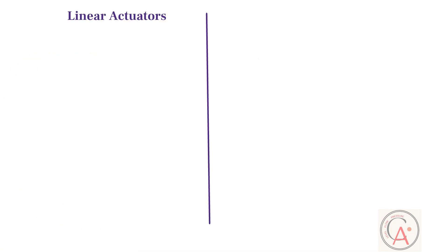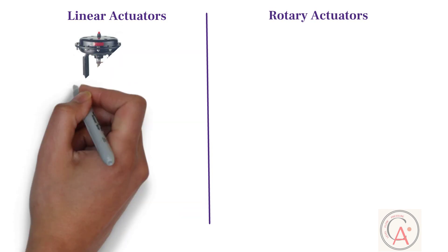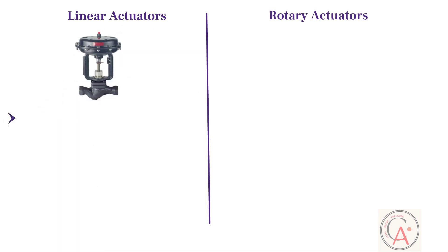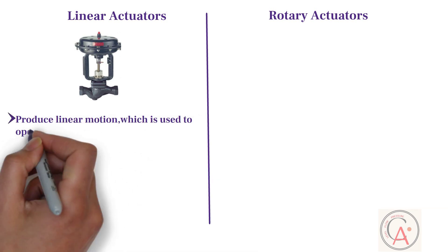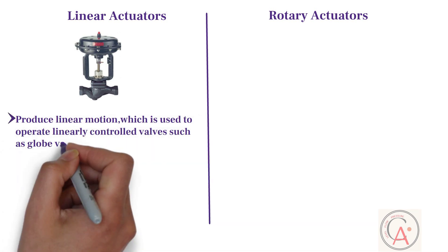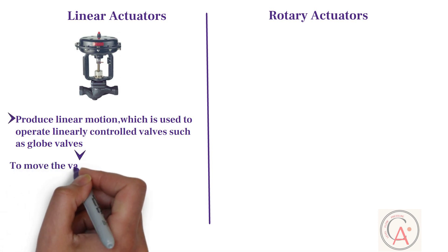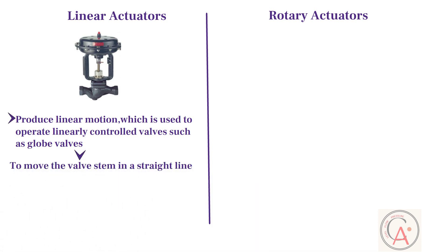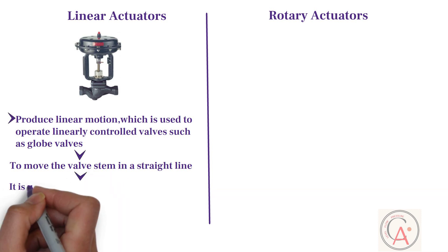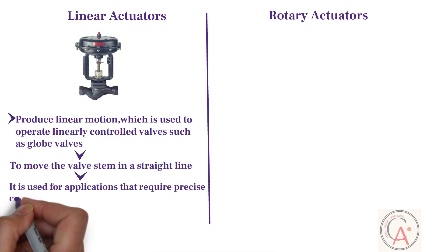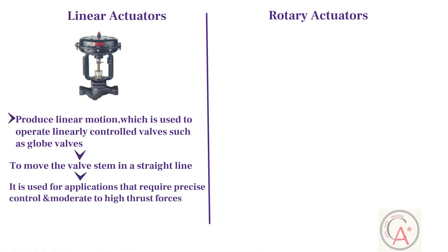As the name suggests, linear actuators produce linear motion, which is used to operate linearly controlled valves such as globe valves. They are designed to move the valve stem in a straight line, either pushing or pulling the closure element to modulate the flow. Linear actuators are typically used for applications that require precise control and moderate to high thrust forces.